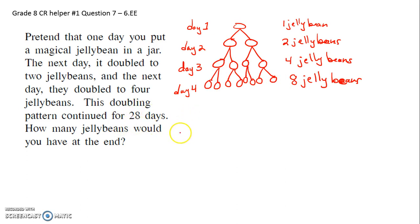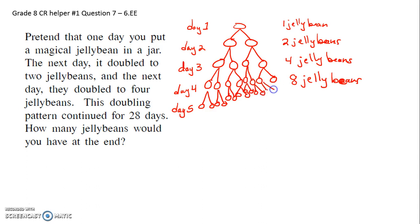We've got to go all the way to day 28 — I don't think I'm going to continue drawing this pattern much longer, but let's do day five. Each of the eight jelly beans doubles. So on day five, counting them up: one through sixteen. Sixteen jelly beans!